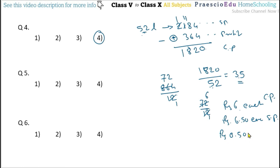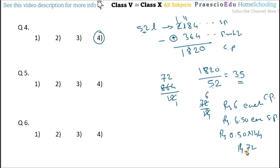There are 12 dozen total, which is 144 guavas. So total profit is 0.50 multiplied by 144 equals 72 rupees. So rupees 72 profit is given in option number 1.